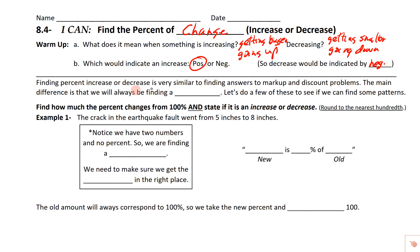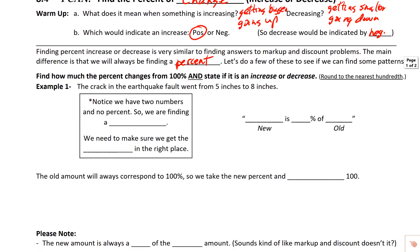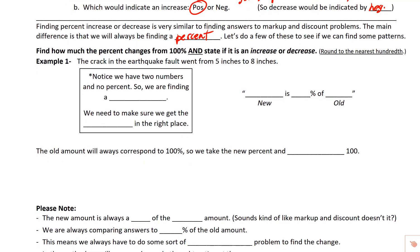Finding the percent of increase or decrease is very similar to finding markup and discount problems. The main difference is we're always going to be finding a percent. We're going to do a couple of problems and see if we can spot some patterns. Find how much the percent changes from 100% and state if it is an increase or decrease. We always want to make sure that we round to the nearest hundredth.